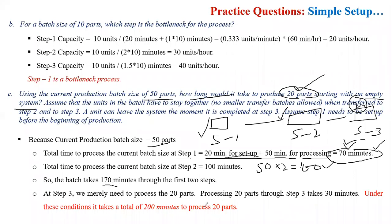Now moving towards step number three: when we start making a batch of 50 units, we only need to make 20 units at this stage. So 1.5 minutes multiplied by 20 gives us 30 minutes. Therefore, 170 plus 30 gives us a total answer of 200 minutes.